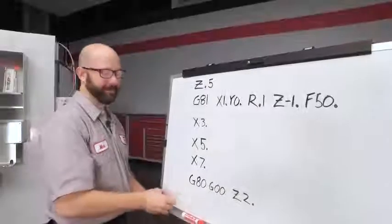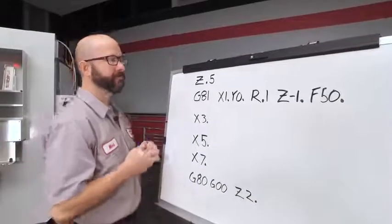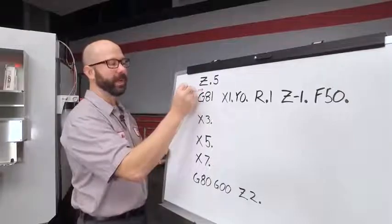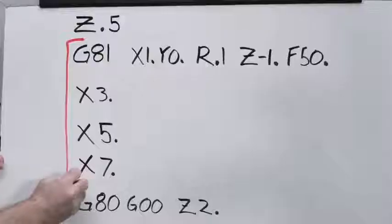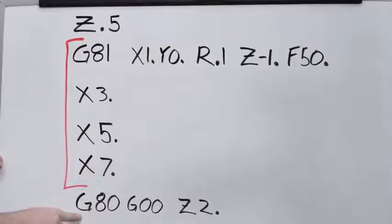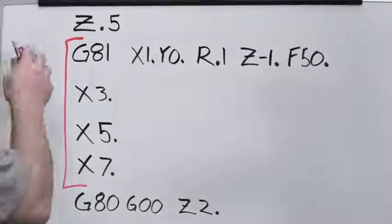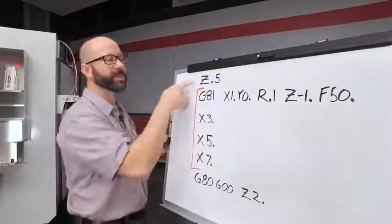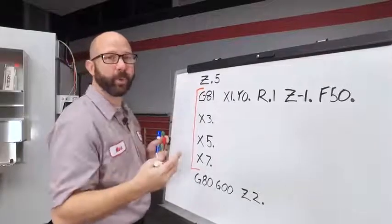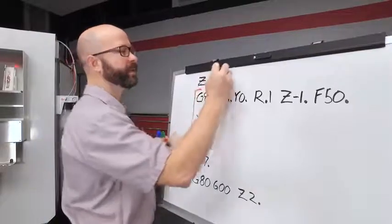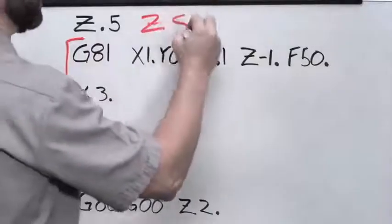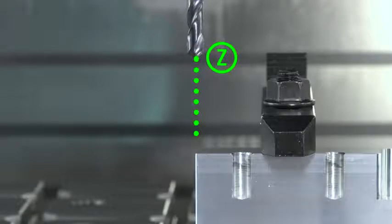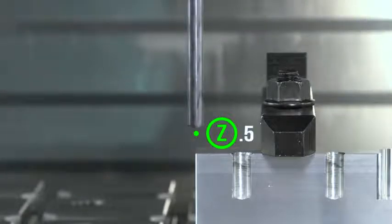Well, here's our program. Now, our CAN cycle starts with our G81 line and goes all the way until we cancel it with the G80. Just prior to our CAN cycle, we positioned our Z axis. Now, the control is going to store that value as our Z starting position. Just lock that value in your memory for a minute. We'll come right back to it.